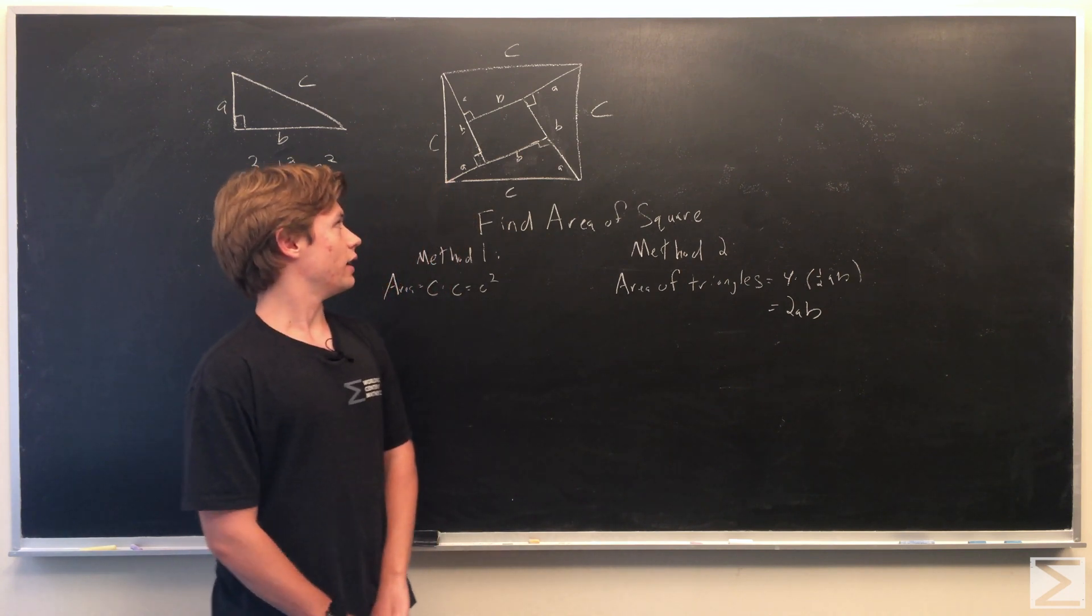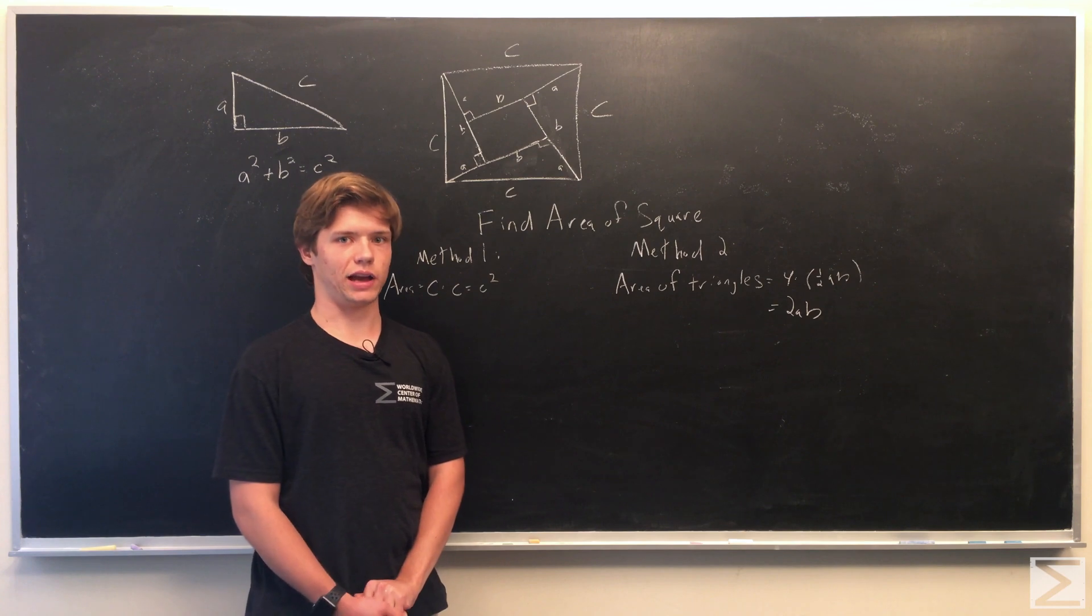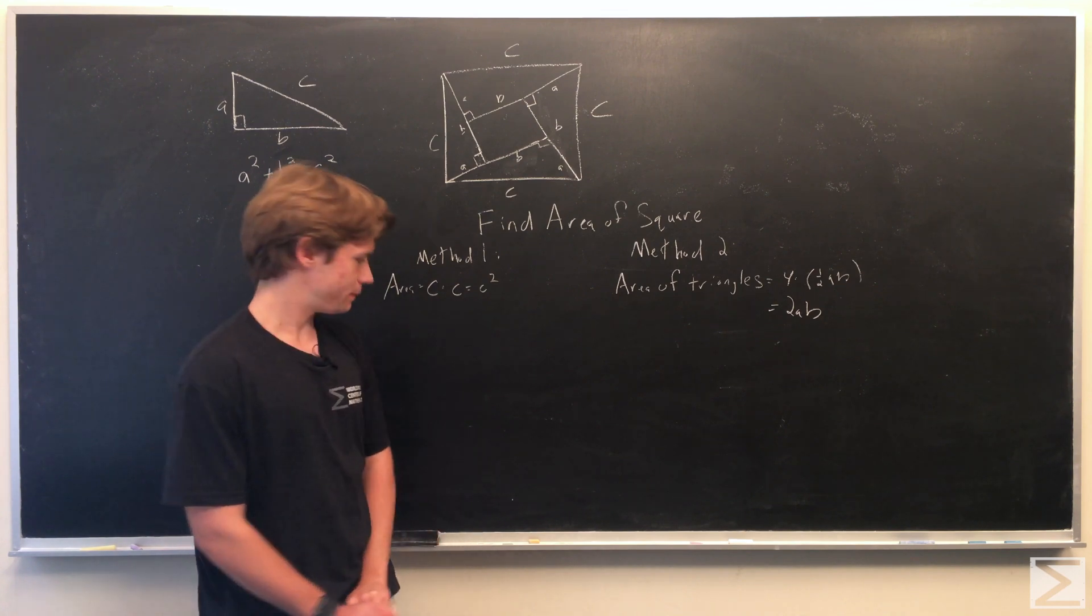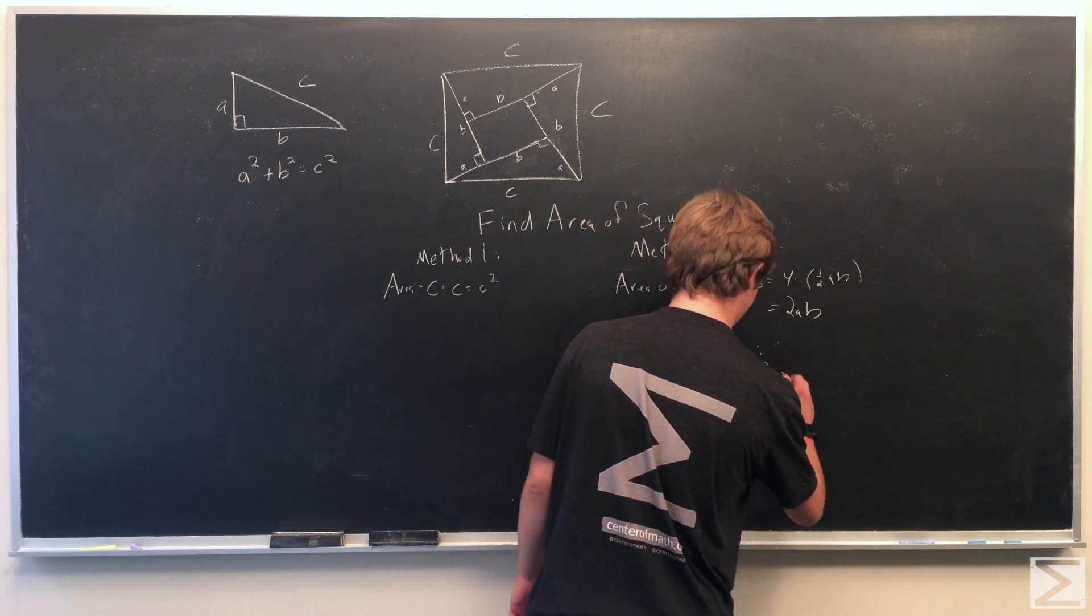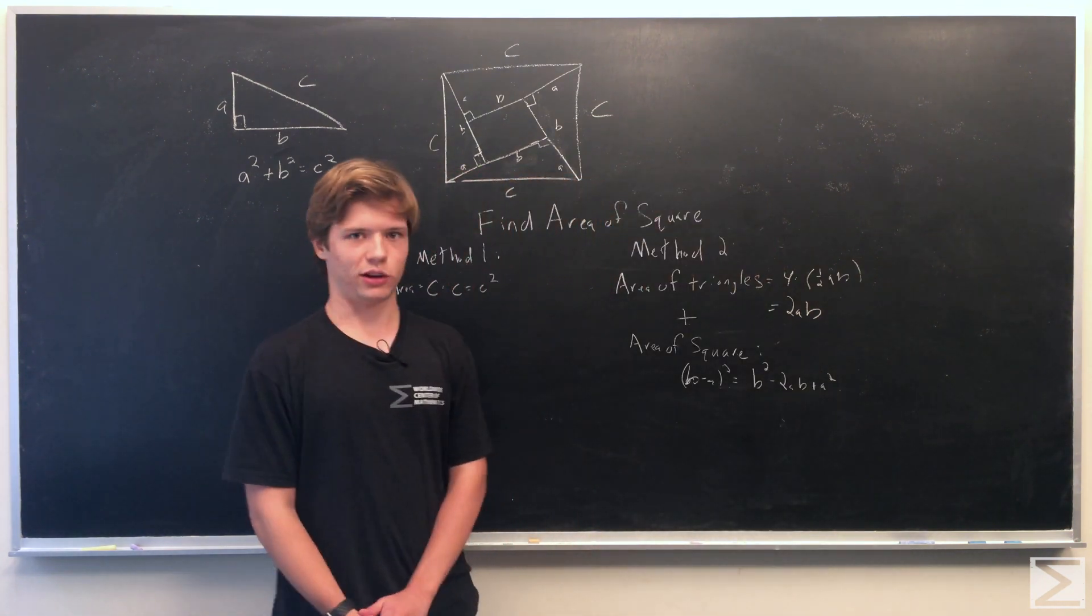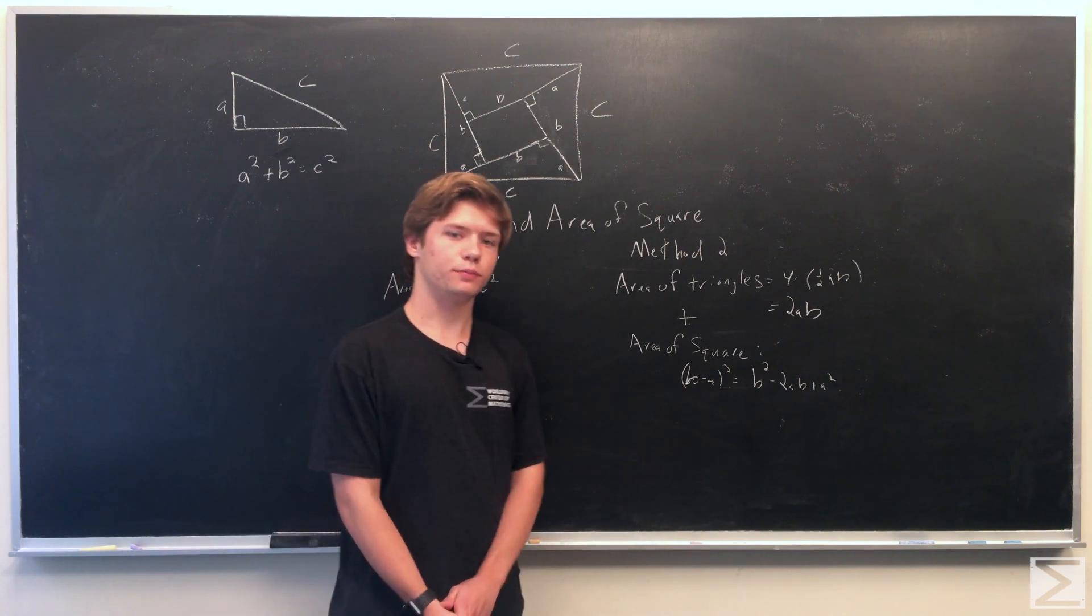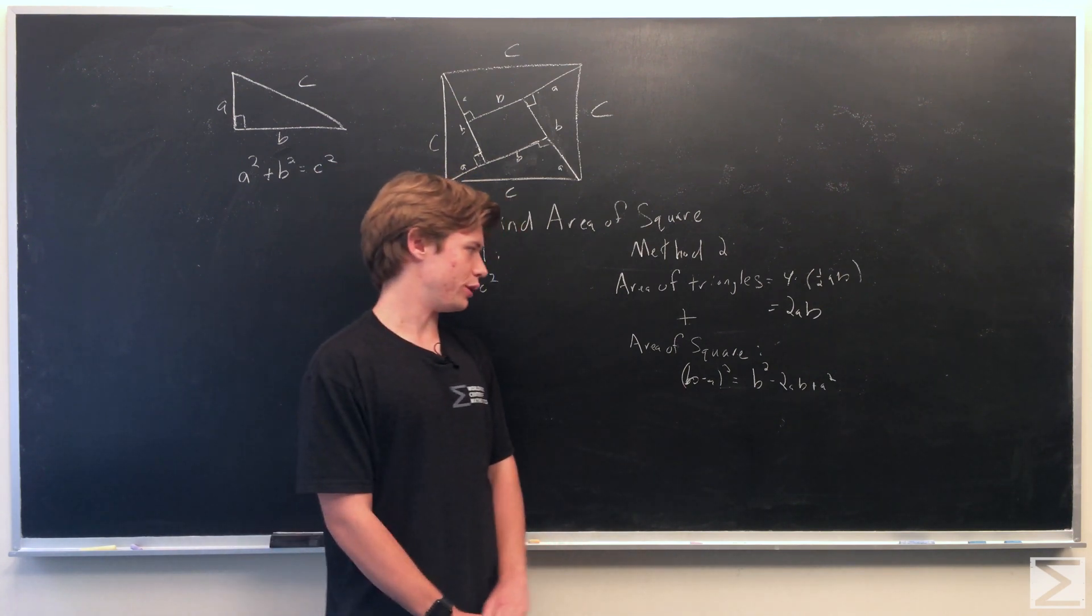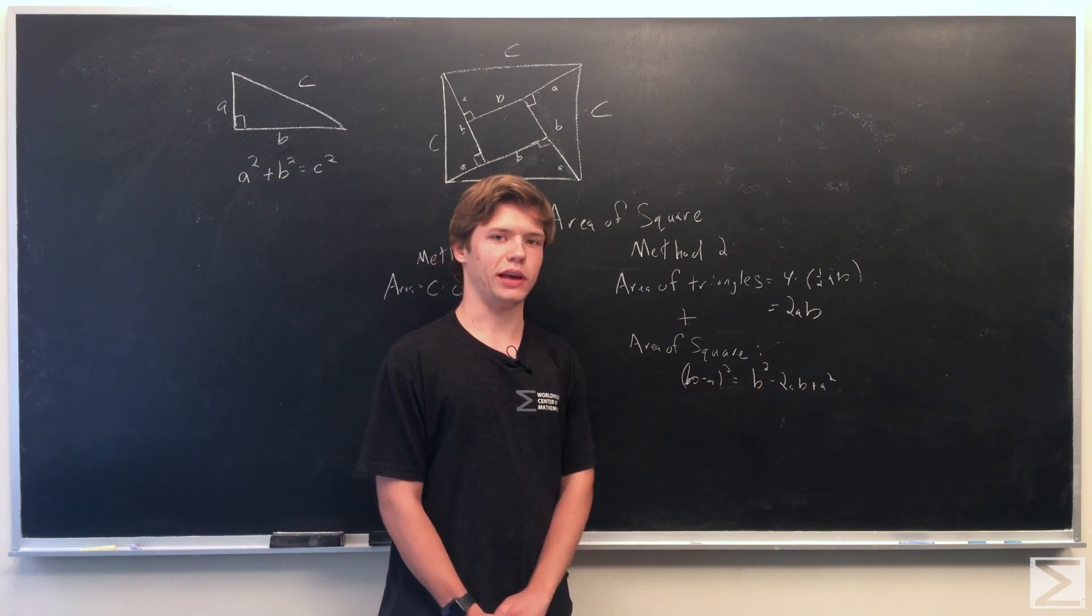So the sides as we said is equal to b minus a and so now we'll just square that and see what we get. So now that we've solved that we can see that area is equal to just b minus a squared. Simply foiling it through we see that the area is equal to b squared minus 2ab plus a squared.